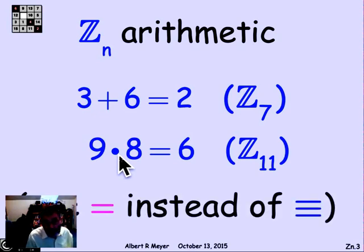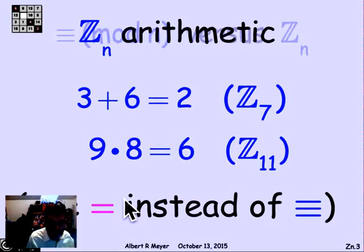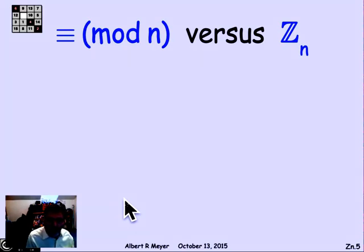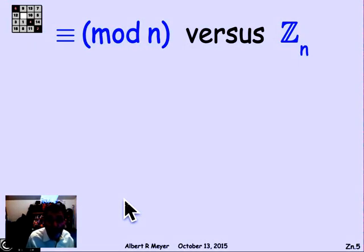And so in short, all we're doing is replacing congruence modulo n with equality in this algebraic structure Z_n. But it's going to see in the video after this one that working with equality makes some arguments just a little bit simpler to state and formulate.